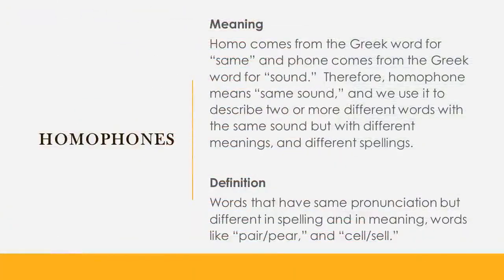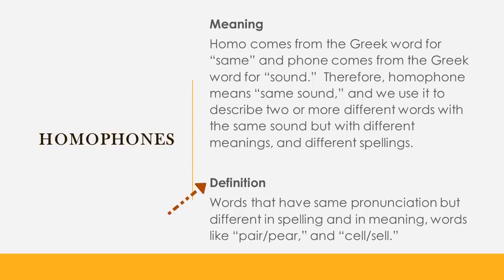Now let's get into the second part of our topic — homophones. 'Homo' comes from the Greek word for 'same' and 'phone' comes from the Greek word for 'sound'. Therefore, homophone means 'same sound'. We use it to describe two or more different words with the same sound but with different meanings and different spellings. Words that have the same pronunciation but are different in spelling and in meaning.